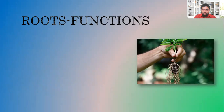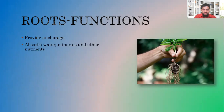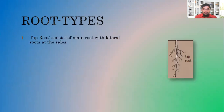We're now going to look at roots — their functions and internal structure. The functions of roots are: to provide anchorage, allowing the plant to anchor firmly onto the soil; to absorb water; to absorb minerals, which are dissolved in the water; and to store food — for example, carrot is a root adapted to store a lot of food. There are four main types of roots. The taproot consists of a main root at the center with lateral roots branching off it.